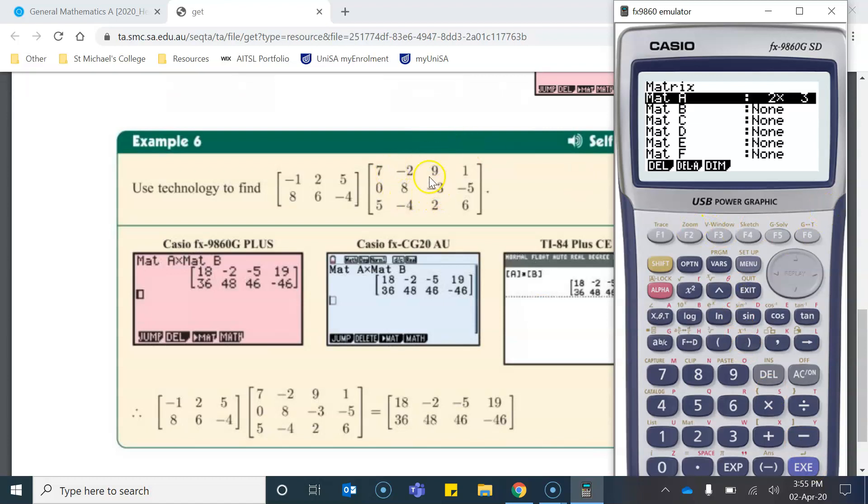Now, I'm going to put this matrix into matrix B on the calculator. Again, the order is 3 by 4. So 3 rows, 4 columns. And now I can put in my values.